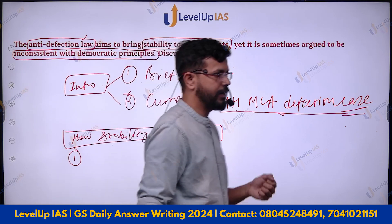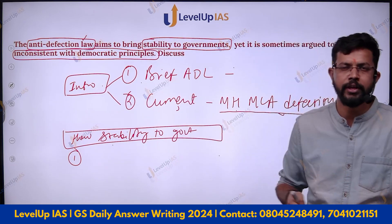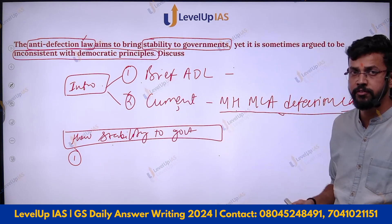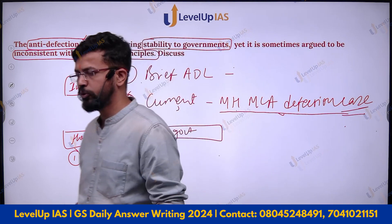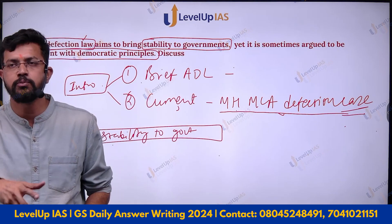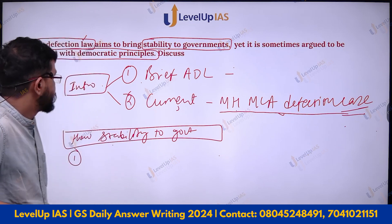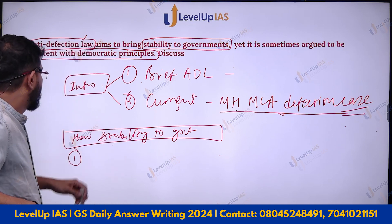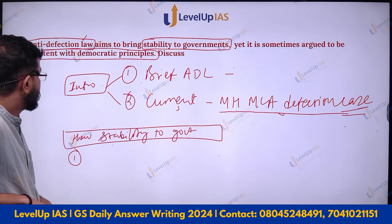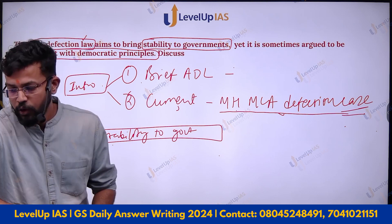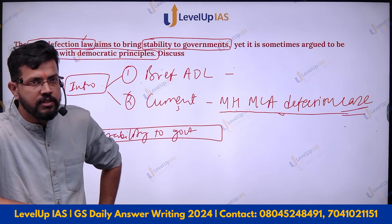In a 10-marker, you can write four points each — eight points are sufficient. In case it is a 15-marker, make sure you write at least five to six points each. So here, how is the anti-defection law ensuring stability to the government? The very first point is enforcing party discipline.